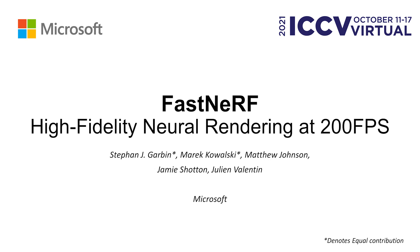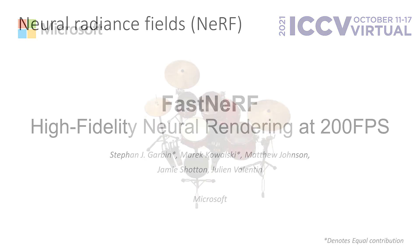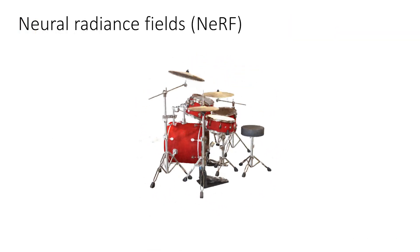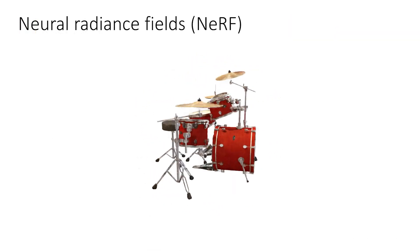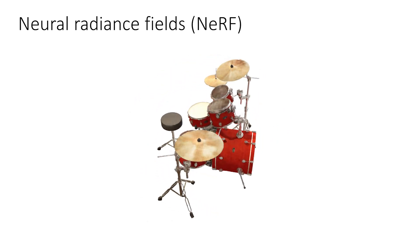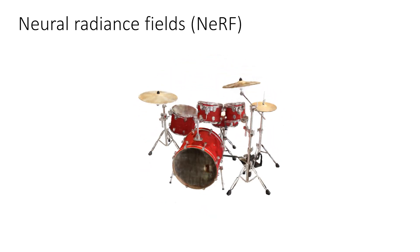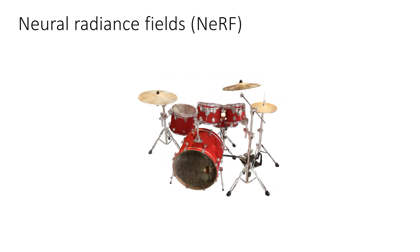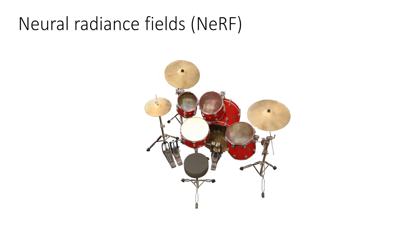We present FastNeRF, a neural radiance fields method capable of rendering high-fidelity content orders of magnitude faster than previous approaches. Neural radiance fields, or NeRF for short, is a recent method that allows for capturing a high-quality representation of a 3D scene within the weights of a neural network. This network maps position and direction to color and density, which can be integrated using traditional volume rendering.